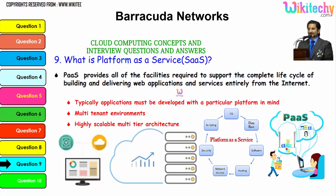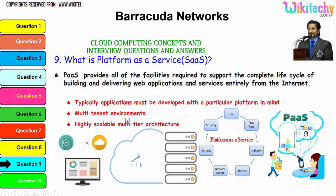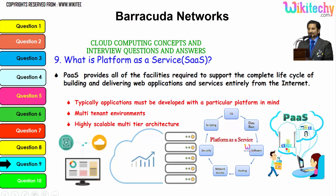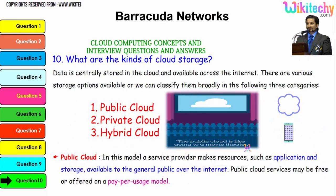Now, what is Platform as a Service? PaaS provides all the facilities required to support the complete lifecycle of building and delivering web applications and services entirely from the internet. Applications must typically be developed with a particular platform in mind. It's a multi-tenant, highly scalable architecture. PaaS means they give you a server with a particular operating system — you are renting an OS — and you can add software, a database, hosting, network access, security, and scripting. Everything is included in Platform as a Service.